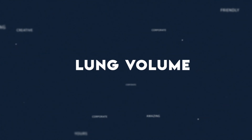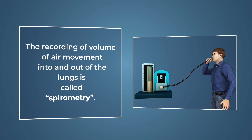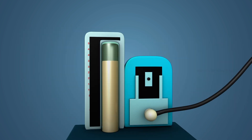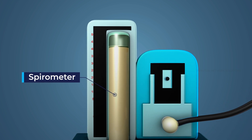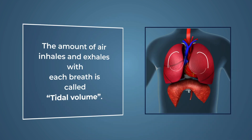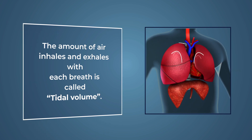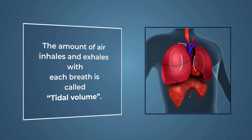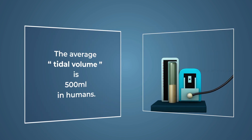Lung volume. The recording of volume of air movement into and out of the lungs is called spirometry and is measured with the help of the spirometer. The volume of air an animal inhales and exhales with each breath is called tidal volume; it averages about 500 milliliters in humans.